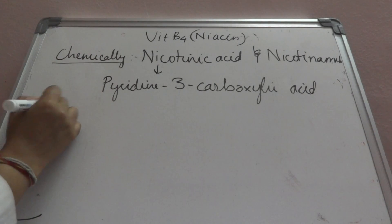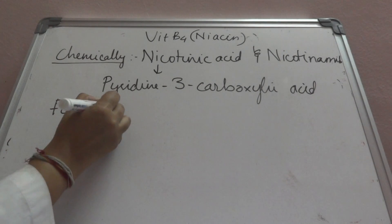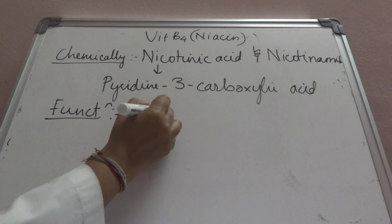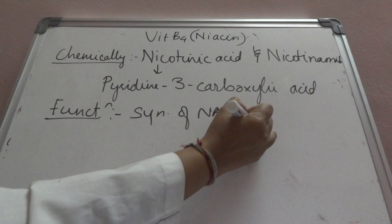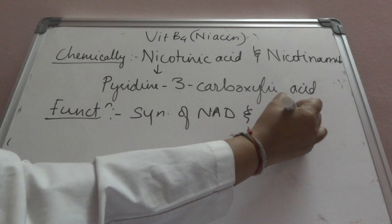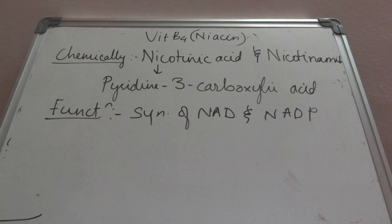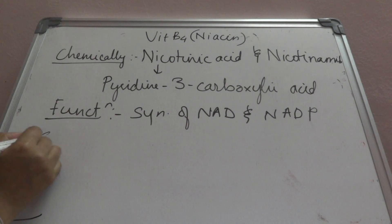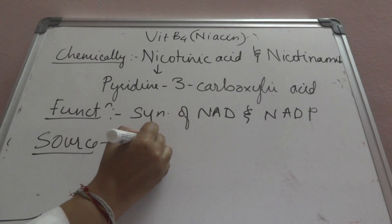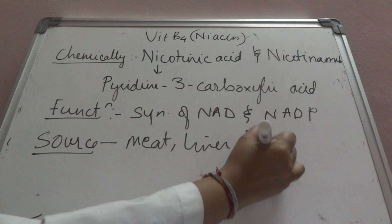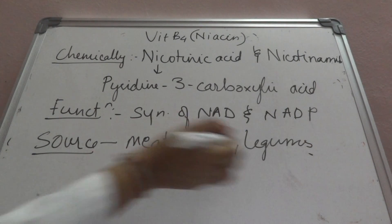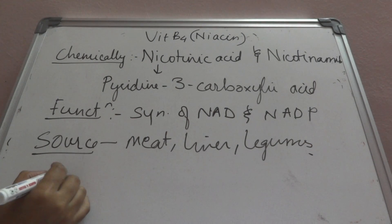The most important function of niacin is synthesis of NAD and NADP, because they are mostly used in many metabolic reactions. The sources are meat, liver, legumes, and whole cereals.